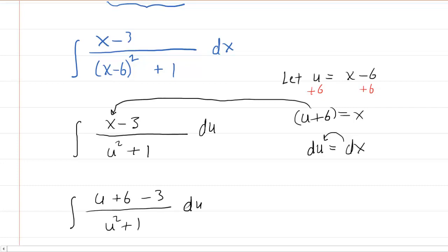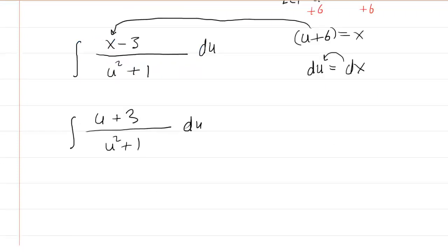Now in fact, the numerator can be simplified because we have six minus three, so that's just going to become u plus three. Now that we've rewritten it in this form, we can actually rewrite it just a little further.